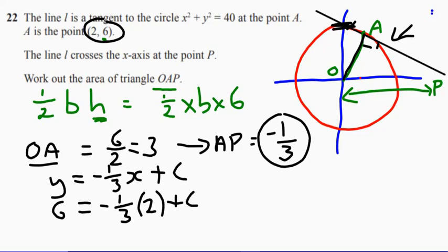we've got 6 equals minus 1 third multiply by the 2 and add C. Now, if you rearrange that, C ends up being 6 and 2 thirds. Now, mathematicians do not like mixed fractions, so when we're getting into higher level maths, it's much easier to write it as a top-heavy fraction. So as a top-heavy fraction, that's 20 over 3.